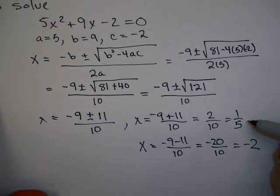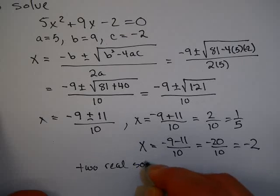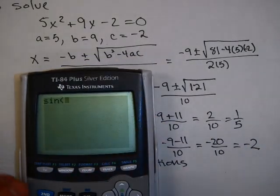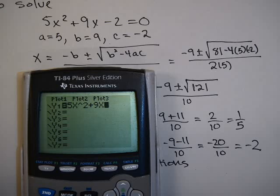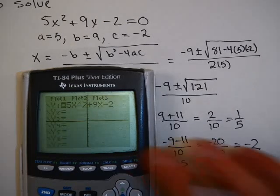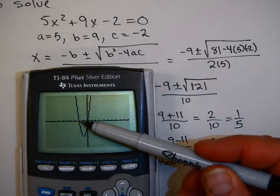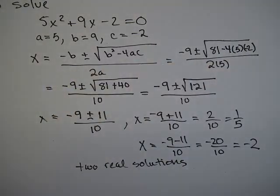So here we have two real number solutions. If I draw a graph of this function on my calculator — 5x² + 9x − 2 on the standard window — you'll notice that the two x-intercepts are −2 and 1/5. In this case we have two x-intercepts and two real solutions.